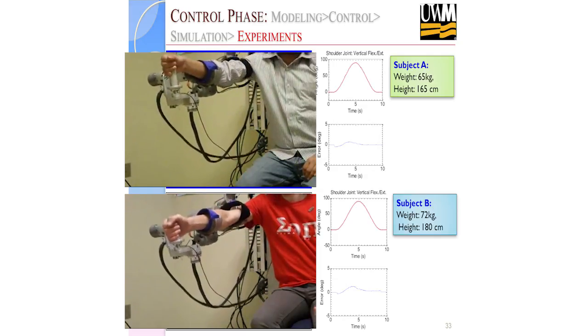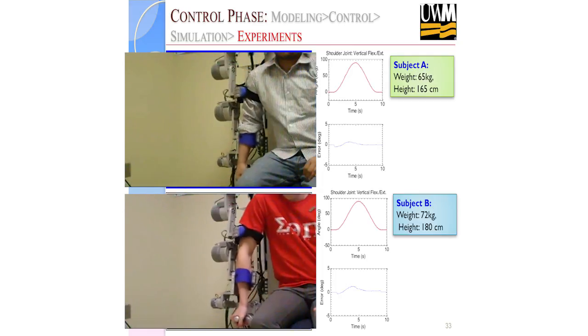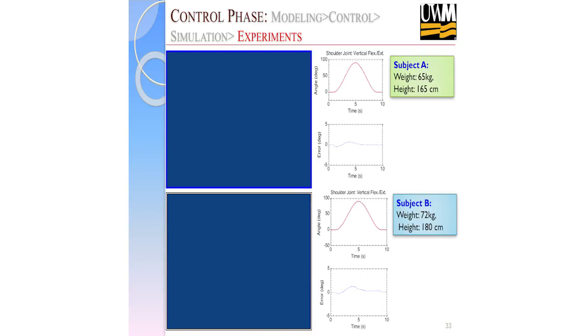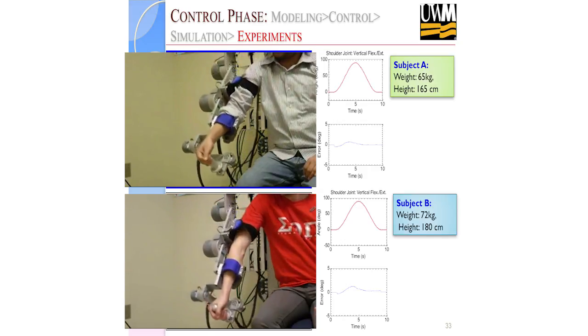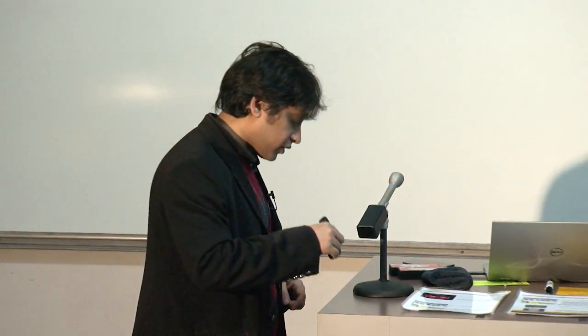We implemented experiments with two different subjects — 65 kg and 72 kg, different heights — doing the same shoulder vertical flexion-extension exercise. The red dotted line is the reference trajectory and the blue line is the measured trajectory from the robot. The tracking error is almost negligible — about 0.5 degrees. For rehabilitation purposes, error is not a big issue since we're just giving motions. But from an engineering and publication standpoint, controller performance matters.